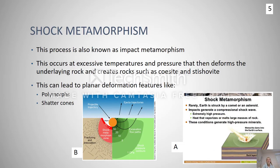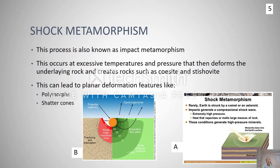One of my favorites is shock metamorphism — it's very unique and we don't see it often. This occurs whenever something large strikes the earth, creating excessive pressure and temperatures that cause deformation in the underlying rock. It usually happens when a meteor or comet strikes the earth, and it creates material grains and shatter cones on the impact rock, mostly producing stishovite and coesite. It's very uncommon. Diagram A is particularly visual because it actually shows a meteorite striking the earth and the rock layers that eventually change as a result.